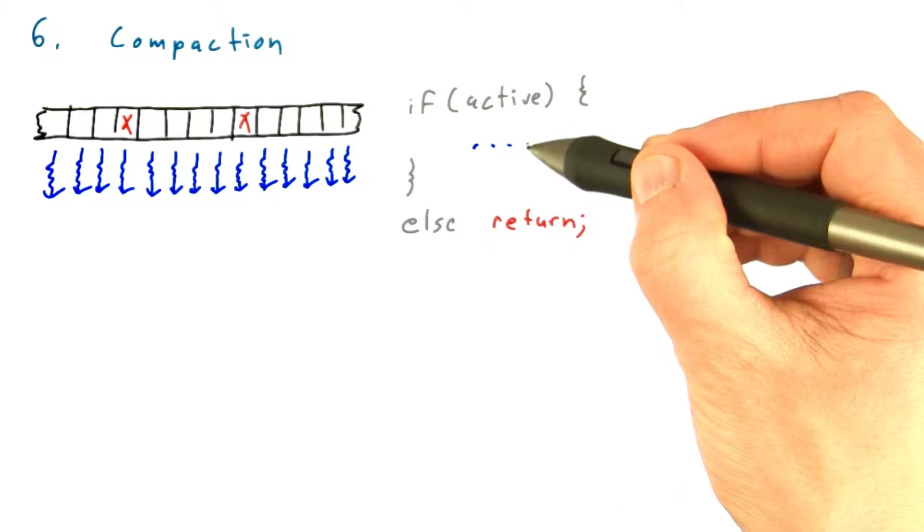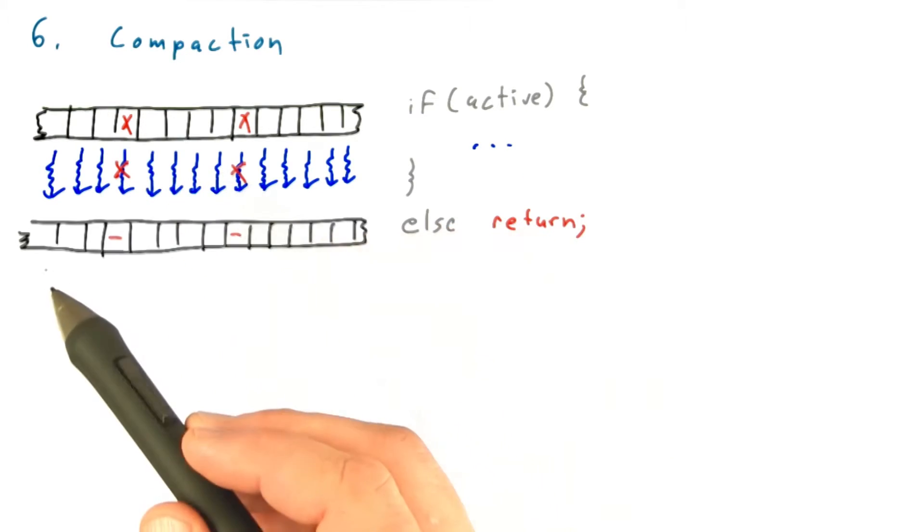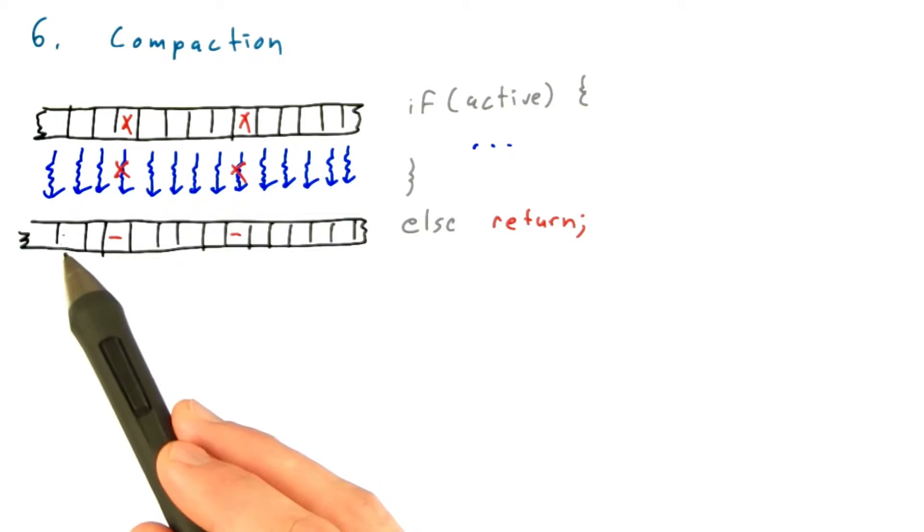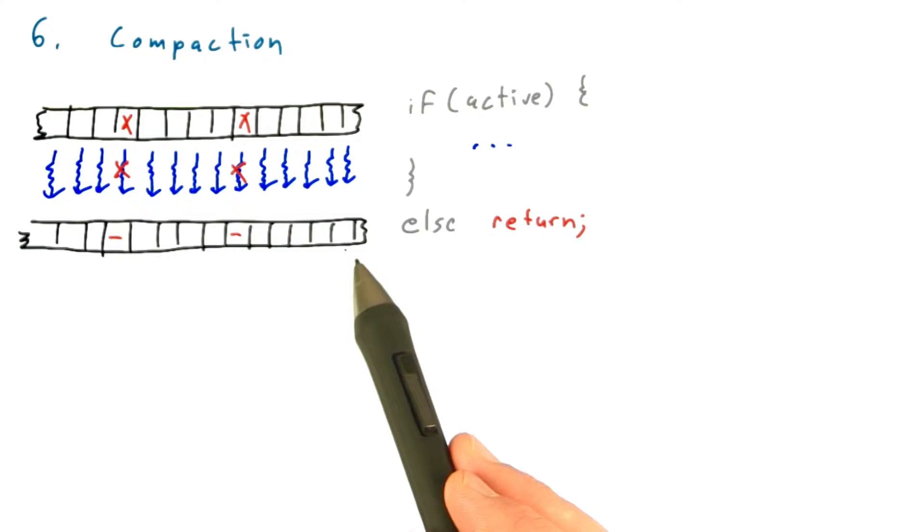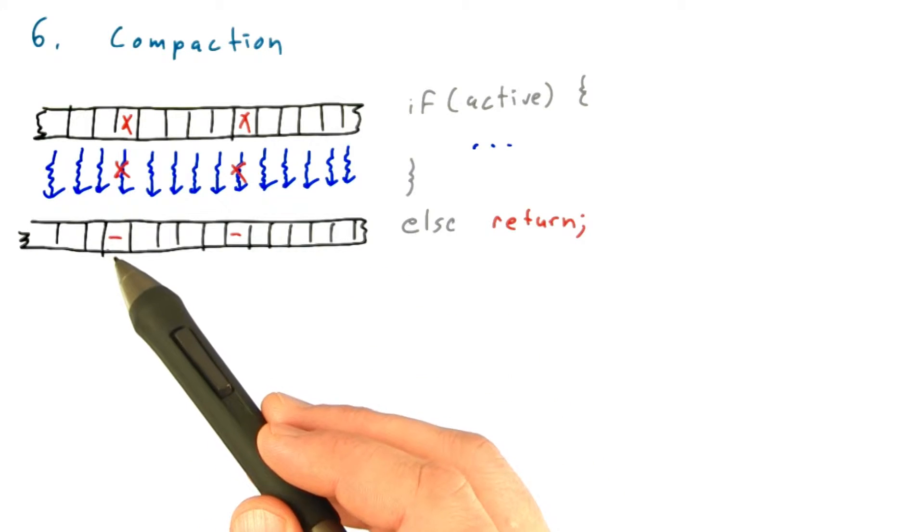The threads that are active will do whatever they're supposed to do, while inactive threads will simply return. In that case, you'll end up storing valid output in most cells, and the elements in the output where the thread wasn't active because it didn't need to be processed will be left blank.